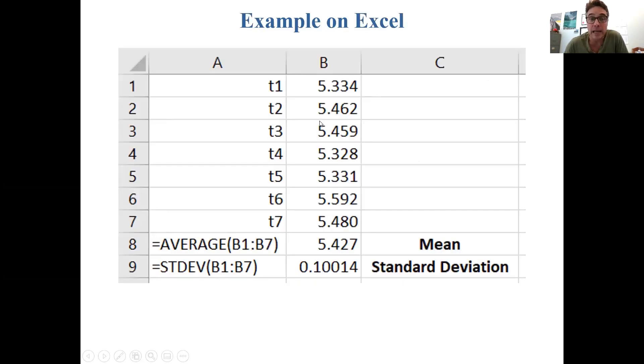Here's an example on Excel of finding the mean of seven measurements of time. 5.334 seconds was the first measurement. You then measured it again and got 5.462 seconds, etc. Seven measurements were made. You can calculate the mean on Excel with a function called average of all of these seven numbers. You can also automatically calculate the standard deviation using STDEV on Excel. In this case, the mean is 5.427 and the standard deviation is 0.10014.